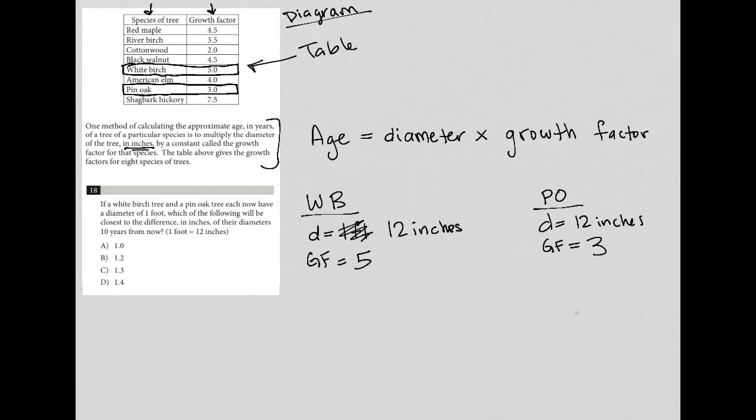So if a white birch tree and a pin oak tree each now have a diameter of one foot, which of the following will be closest to the difference in inches of their diameters 10 years from now? So 10 years from now. How do I want to do that? Well, I don't know how old they are now. Maybe I don't need to know that, but I'm really going to focus on using this formula. So I'm going to say, what is the age of this white birch tree?